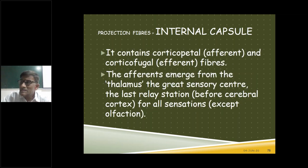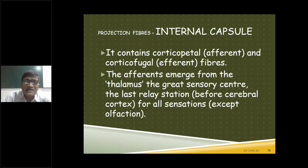The internal capsule contains projection fibers of two types: afferent (corticopetal) and efferent (corticofugal). Afferent fibers carry sensations toward the cerebral cortex; efferent fibers carry motor impulses from the cortex down to basal nuclei, diencephalon, brainstem, and spinal cord. The afferents emerge from the thalamus, which is the great sensory center — the last relay station before the cerebral cortex for all sensations except olfaction.